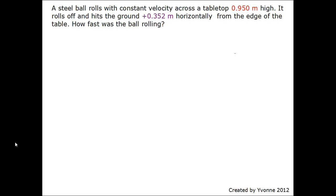A steel ball rolls with constant velocity across a tabletop 0.950 meter high. It rolls off and hits ground 0.352 meter horizontally from out of the table. How fast was the ball rolling?